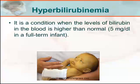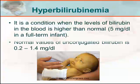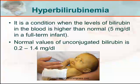Hyperbilirubinemia is a condition when the levels of bilirubin in the blood is higher than normal — about 5 mg per dl in a full-term infant — and the normal values of unconjugated bilirubin is 0.2 to 1.4 mg per dl.